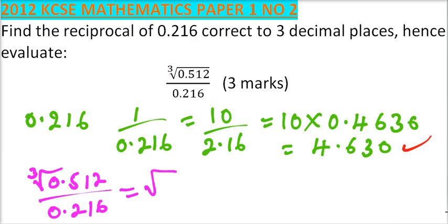this is the cube root of 0.512, you multiply by the reciprocal, that is 1 over 0.216, which is equals to,